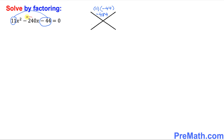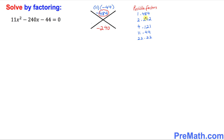Next, look at this middle number, which is negative 240 — this goes at the bottom. Our next step is to find the factors of 484. Don't worry about the negative sign, only 484. Here I have listed all possible factors of 484, and you can see that 2 times 242 is going to work for us. I'm going to put 2 here and 242 here.